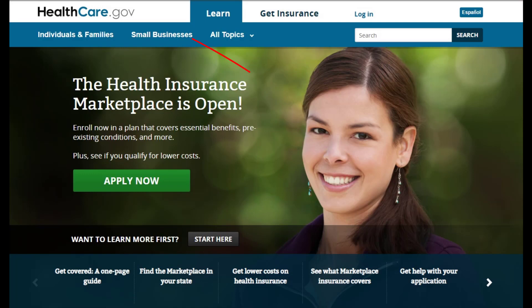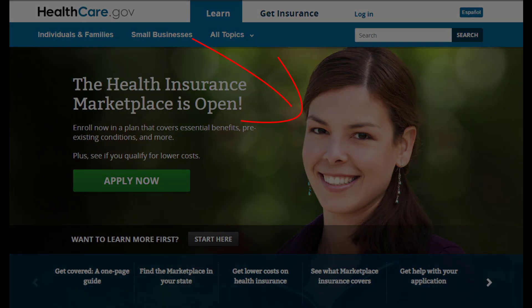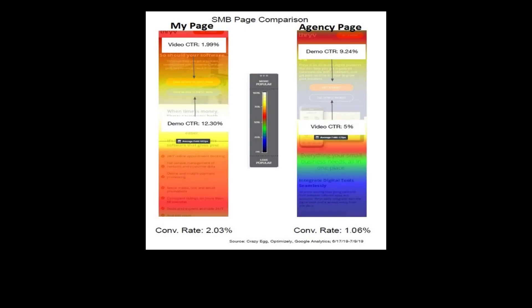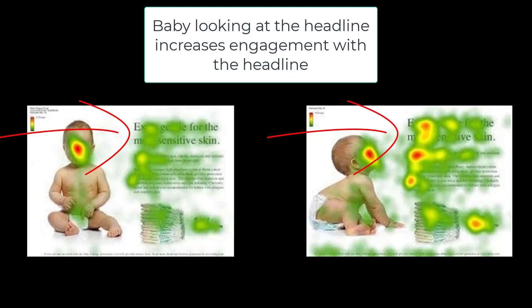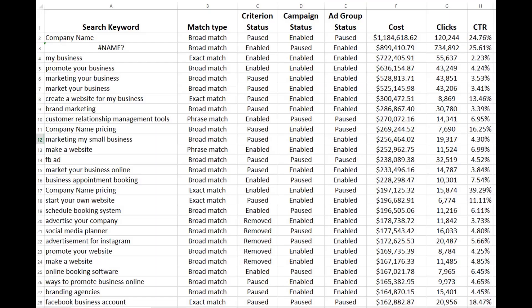Even the images you use will either help grow your online customer base or repel them. We can easily see this with heat maps showing how people look at your marketing material. Common wisdom is to have a smiling woman looking directly at the potential customer, but testing shows this pulls eyes away from the marketing message and lowers the conversion rate. However, having that same model look toward your headline or key marketing concepts actually increases conversions.